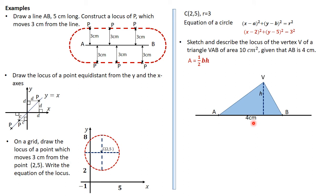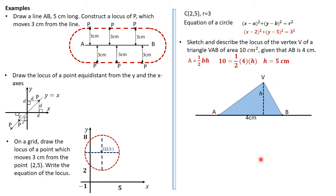Area equals half times base times height. With AB as the base, four centimeters long, and the triangle having area 10, we substitute: 10 = ½ × 4 × h, which gives h = 5. Therefore the perpendicular height is constantly five centimeters for all valid triangles, meaning V could be at infinitely many points above the line AB so long as they are five centimeters from it.